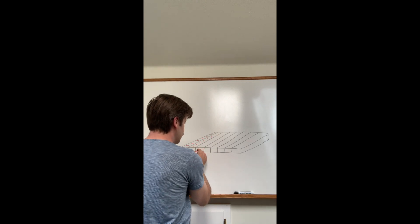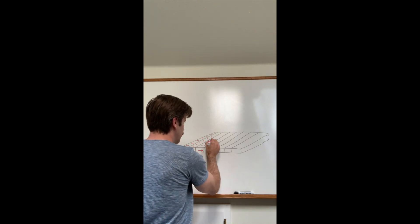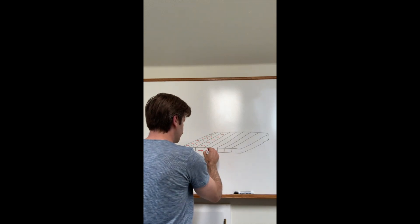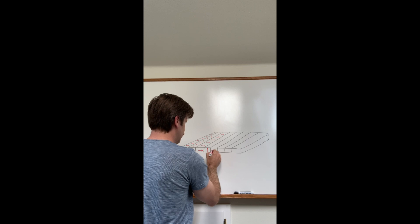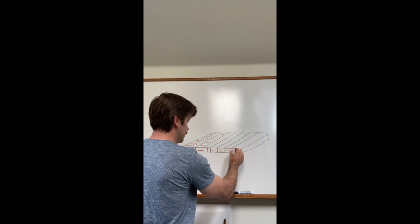So everywhere along here we're looking at the ends of the arrows pointing downwards. Within the stripe it's pointing to the left. On this one it's going to point to the right, and on this one it'll point up. Then we'll repeat: left, down, right, up.